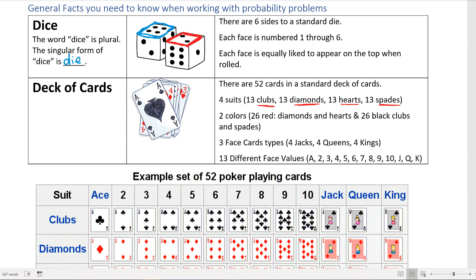Each one of those suits has 13 cards in that suit. There are two colors: 26 red (consisting of diamonds and hearts) and 26 black cards (consisting of clubs and spades). There are three different face cards: jacks, queens, and kings of each suit, so there's four jacks, four queens, four kings.